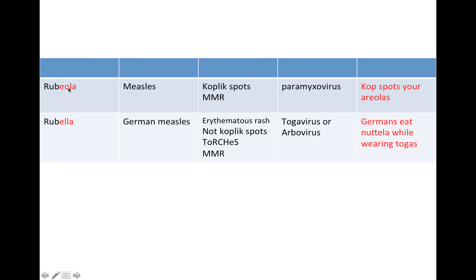Here's a comparison chart: rubella is measles (paramyxovirus, Koplik spots, MMR vaccine), and rubella is German measles (togavirus/arbovirus, erythematous rash, TORCHES mnemonic, MMR vaccine). For rubella, remember: the cop spots your areolas. For rubella, remember: Germans eat Nutella while wearing togas.